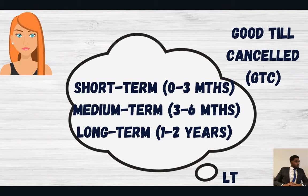In trading, we talk about different terms: short term, medium term, and long term. Short term is three months, medium term is three to six months, and long term is one to two years. Those are the durations, and it depends on the individual.